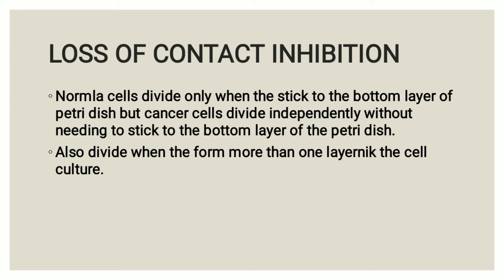Next is loss of contact inhibition. Normal cells growing in the culture medium cannot divide if they do not stick to the bottom layer. Normal cells also lose their ability to divide when they form a layer across the whole surface. They do not divide even in the presence of all required growth factors and other nutritional elements in the petri dish.